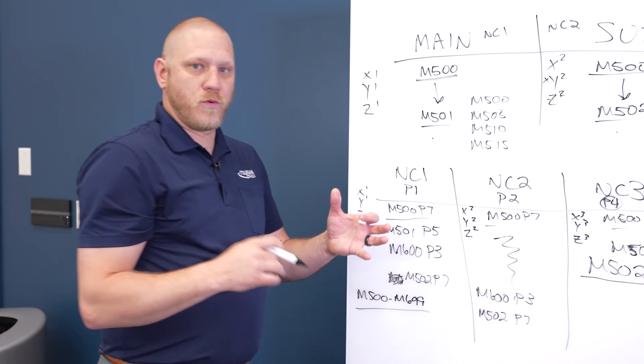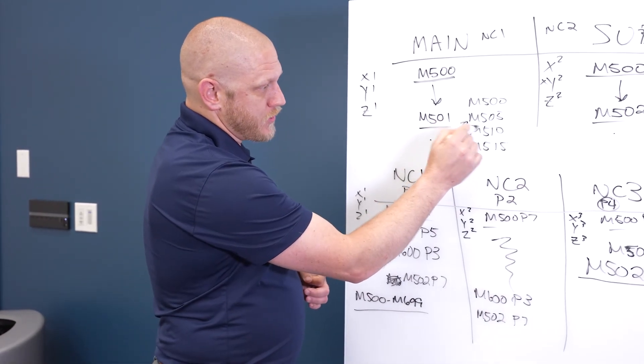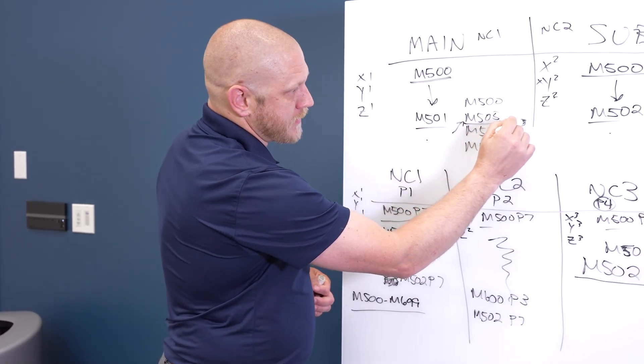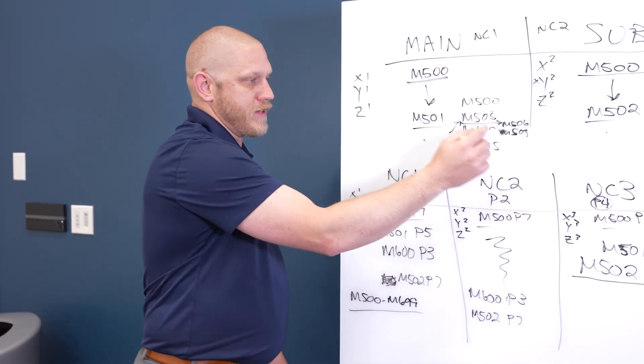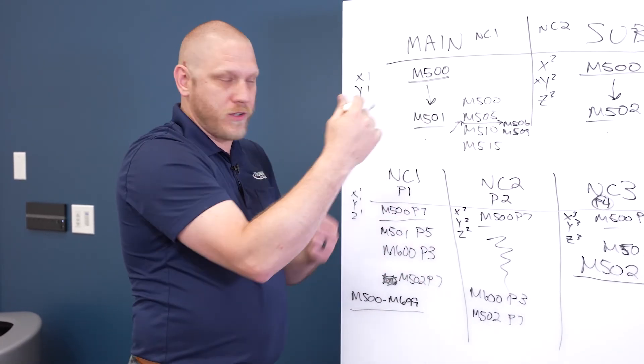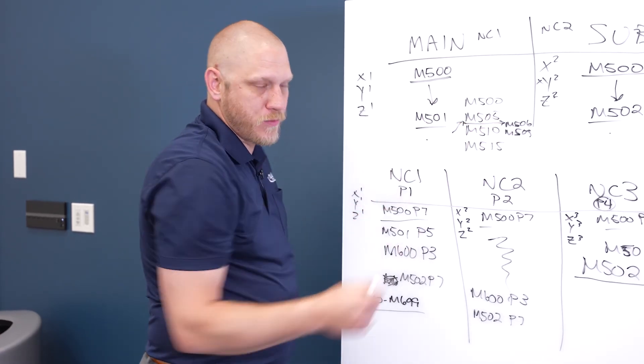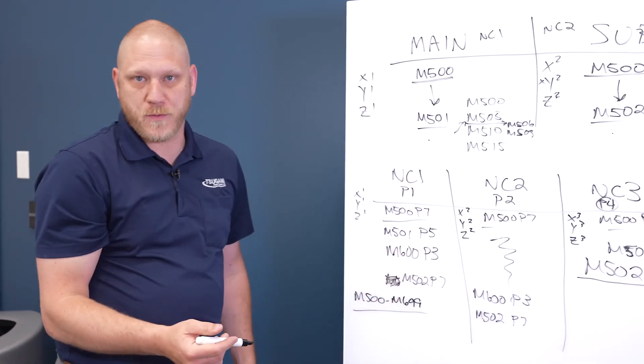Now, if you ever wanted to go back and edit and add a process in between these two weight codes somewhere in here, now you have M506 all the way to M509 without having to go backwards in your numerical order. You can actually add four more weight codes in between each one of those. Same thing with the three path control. You can do it the exact same way.